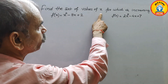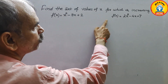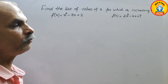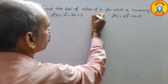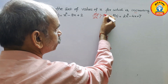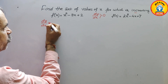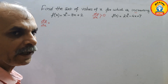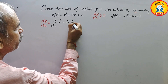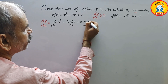The question is: find the set of values of x for which f(x) is increasing. First function: f(x) = x² - 8x + 2. Second function: f(x) = 2x² - 4x + 7. To find where f(x) is increasing, we first perform single differentiation — that is, find dy/dx. We differentiate: d/dx of x² minus 8 times d/dx of x plus 2 times d/dx of x⁰.